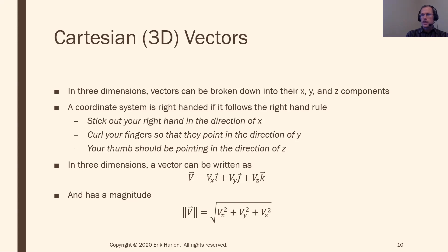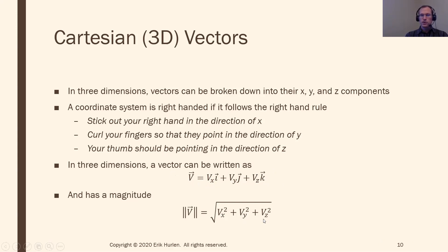Following the same procedure as in two dimensions, I can write a 3D vector in terms of its three components: x, y, and z. There's a new unit vector k that goes in the direction of positive z. Any vector v can be broken down into its x component times i, plus its y component times j, plus its z component times k. The magnitude is given by the square root of x squared plus y squared plus z squared — the Pythagorean theorem with three components.